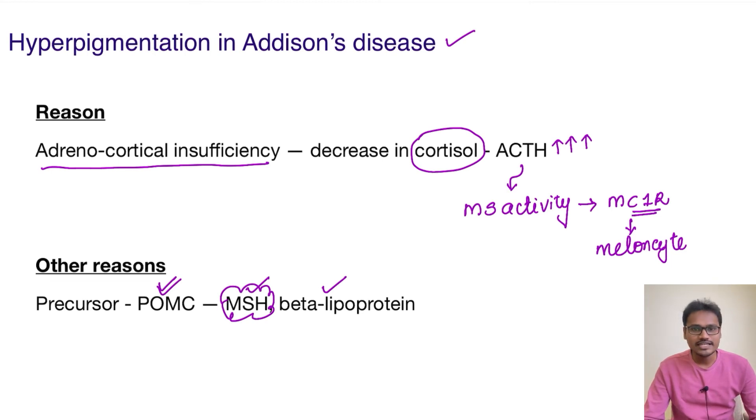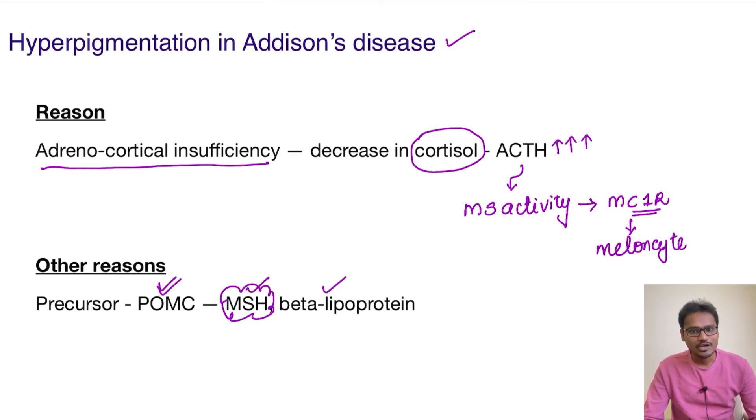Both reasons are valid and both are the causes for hyperpigmentation in Addison's disease. I hope that's clear. Thank you for listening — we'll see you in the next video.